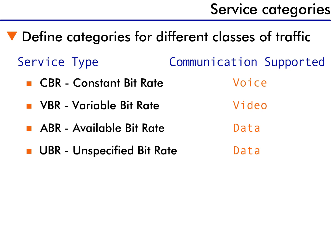Next is the variable bitrate, or VBR category. This category has a priority below that of CBR and is defined to support traffic types that require a variable bitrate. Variable bitrate means the amount of traffic sent by the application varies over time, so the contract defined by the service category must accept data at different bandwidths.